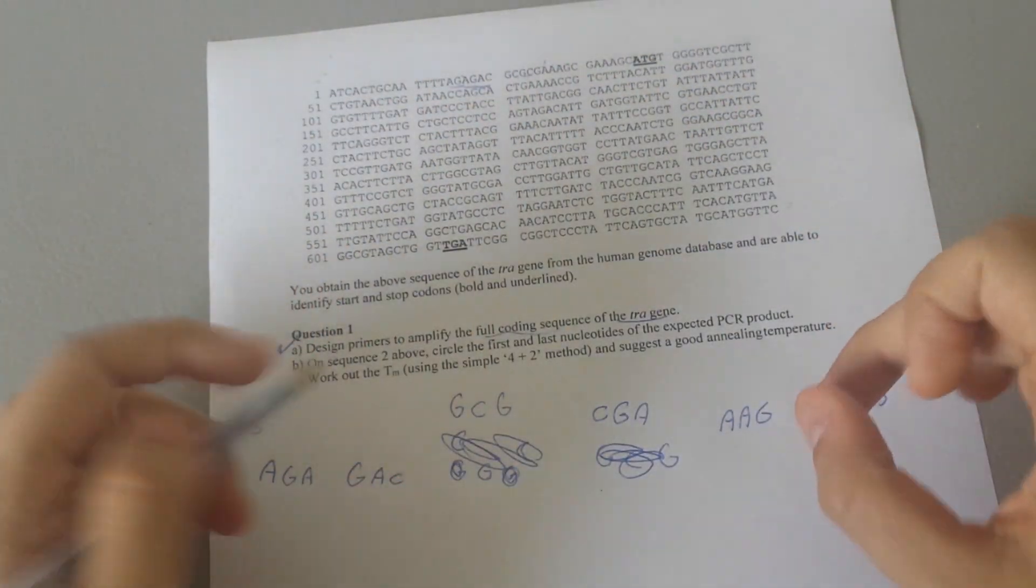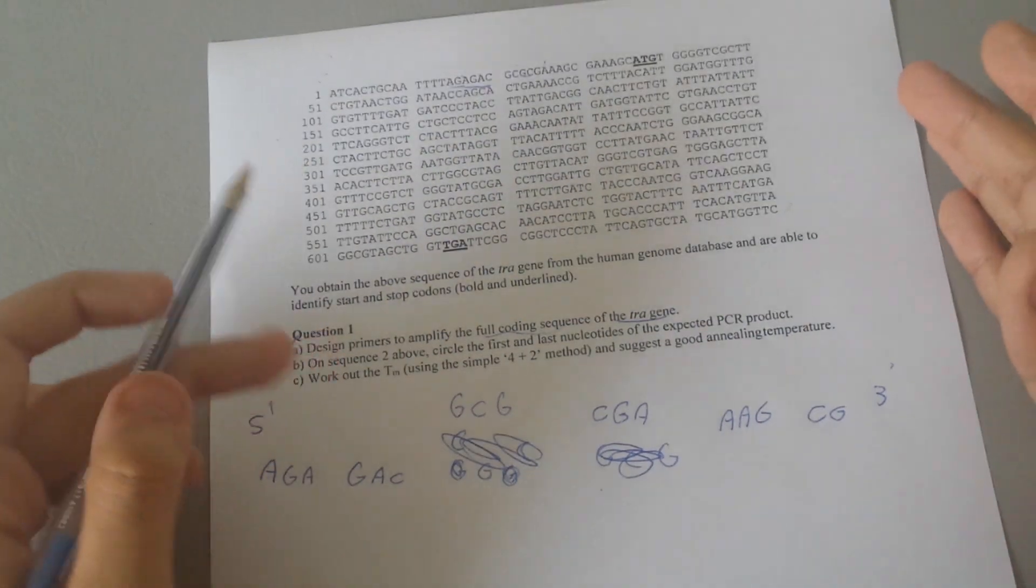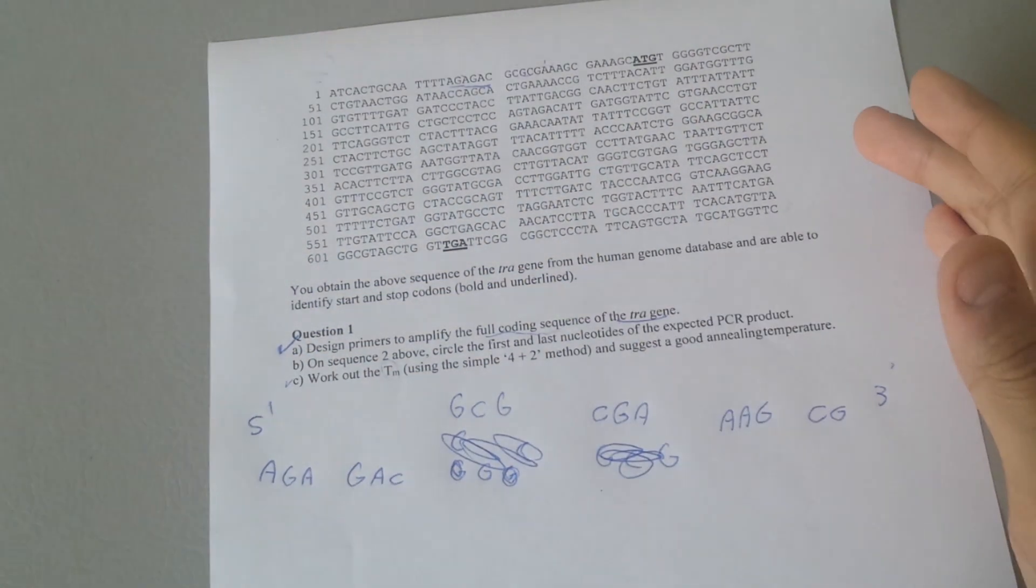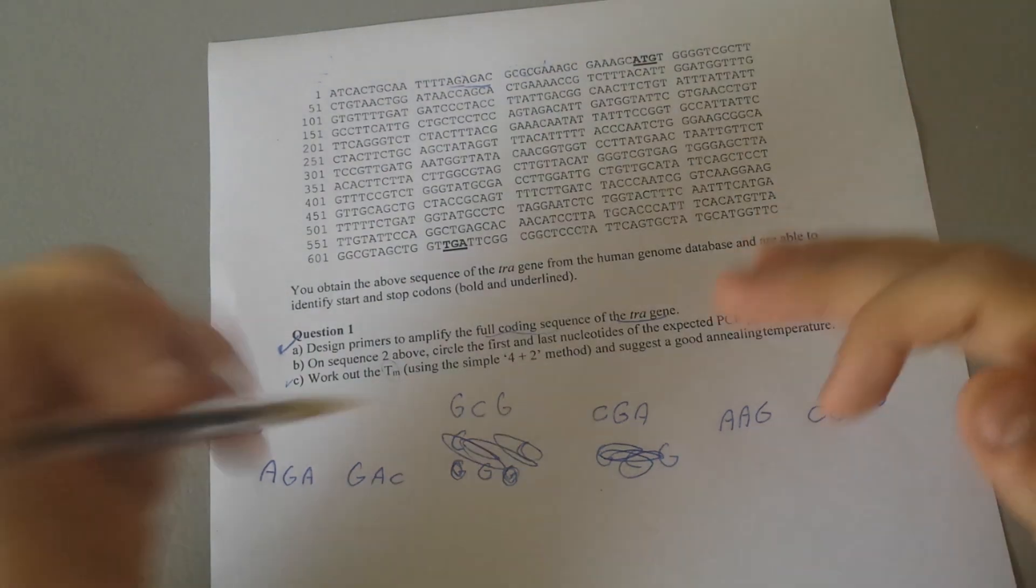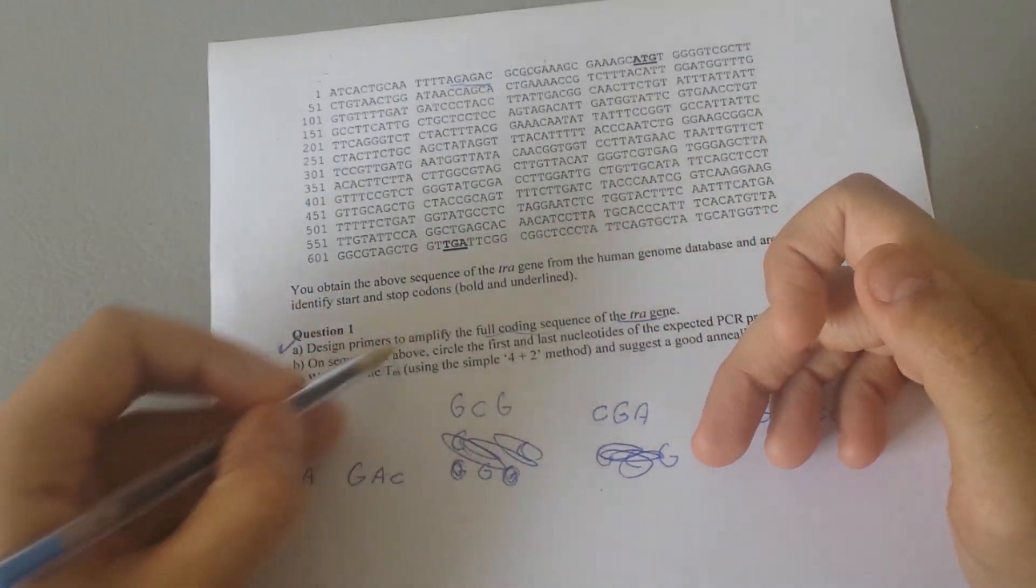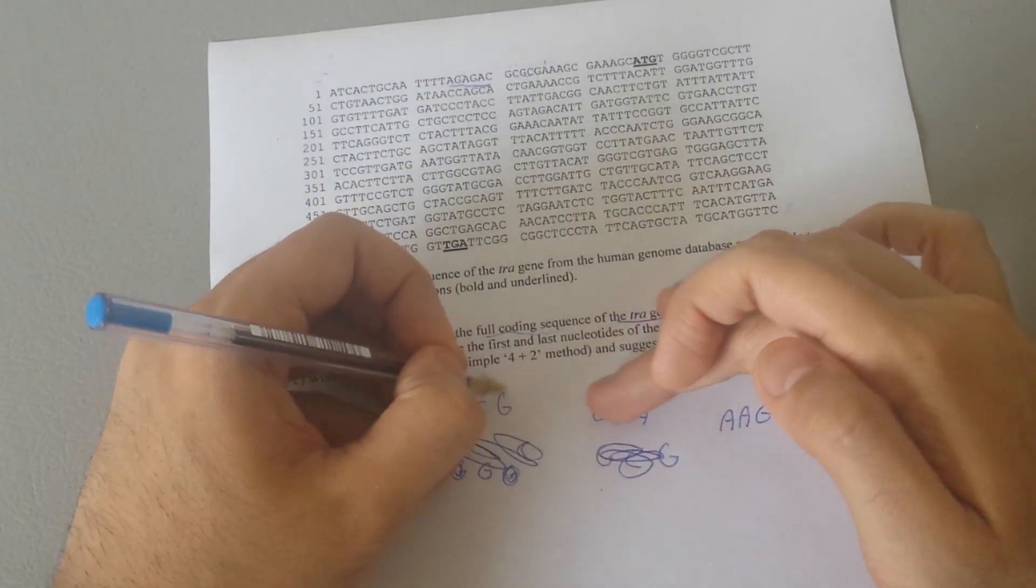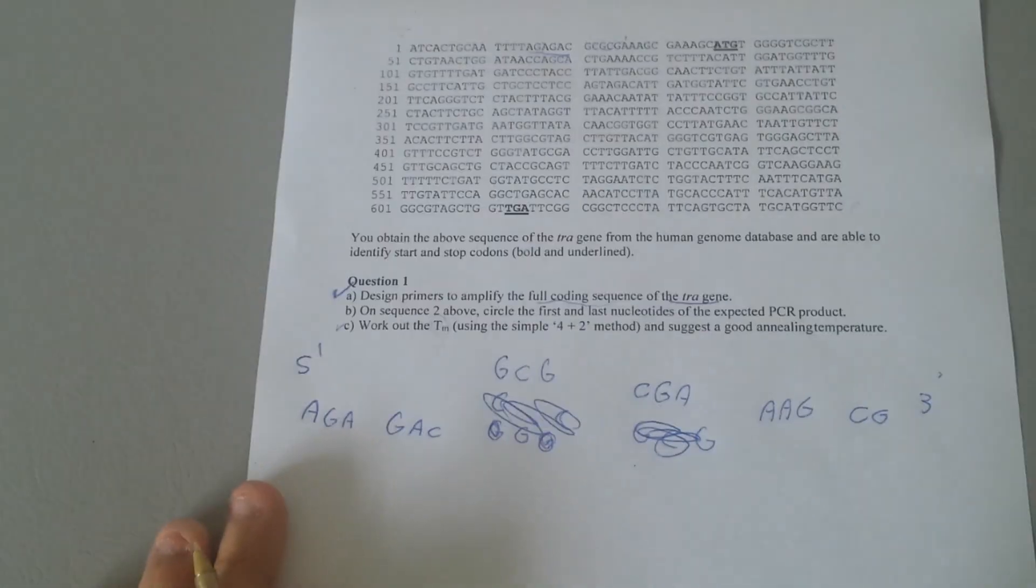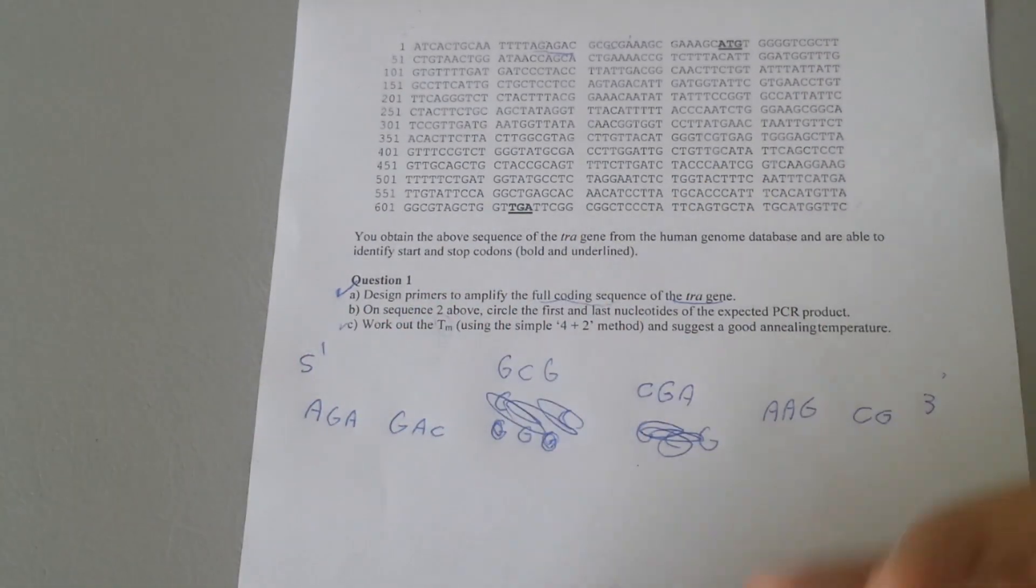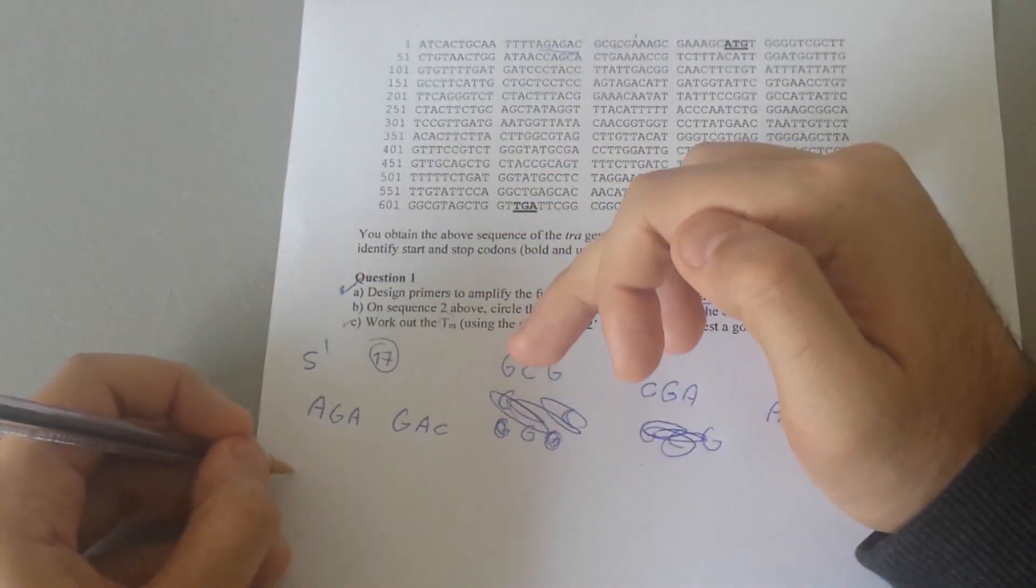You don't necessarily have to include all the nucleotides. As long as you want to go with 17 nucleotides, it is fine. It's very important to work out the Tm because you want to make sure that you have an even number of GCs and ATs, because the method we're going to use to calculate the Tm is the 4 plus 2 method. That is, you're going to times 4 by the whole number of nucleotides of CG and times 2 by whole nucleotides of AT.